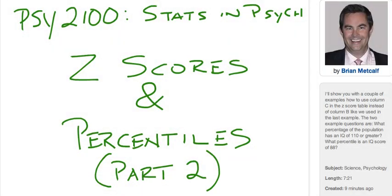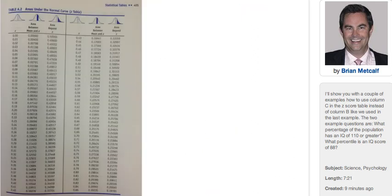Hey, Dr. B here again. In this part two of Z-scores and percentiles, I'm going to show you how to use column C and give you a couple examples of when we're going to want to use column C in our Z-score table instead of column B.